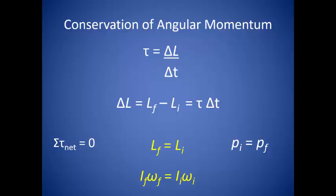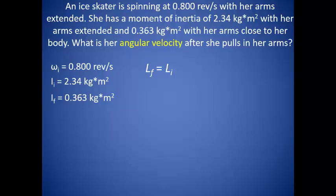If you've ever watched a figure skater move into a spin, you have seen that this can be a dramatic change. Suppose an ice skater is spinning at 0.8 revolutions per second with her arms extended. She has a moment of inertia of 2.34 kilograms times meters squared with her arms extended, and 0.363 kilograms times meters squared with her arms close to her body. What is her angular velocity after she pulls in her arms? Because she's skating on ice, there is very little friction, which lets us assume the net torque acting on her is zero, allowing us to use the law of conservation of angular momentum.